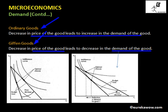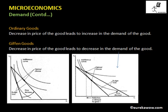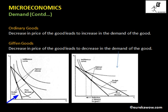Now let's look into ordinary goods and Giffen goods diagrammatically. This is the initial budget constraint. When the price of good one decreases, the budget constraint will rotate outwards about this point, giving us the new budget constraint. This is the initial bundle chosen by the consumer and this is the final bundle. As you can clearly see, the quantity demanded of good one increases as the price of good one decreases — so good one in this case is an ordinary good.